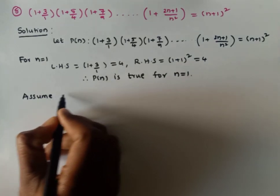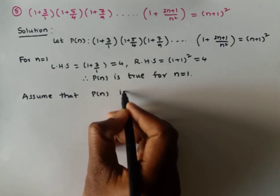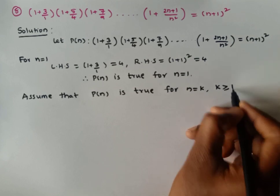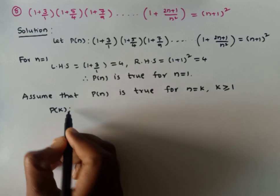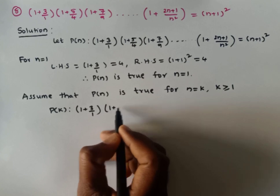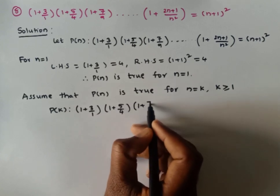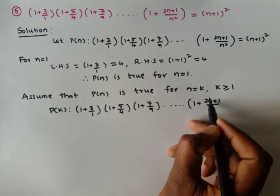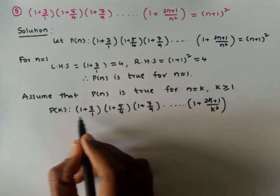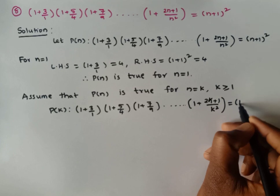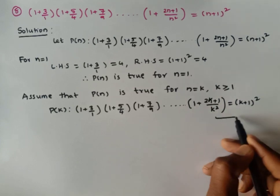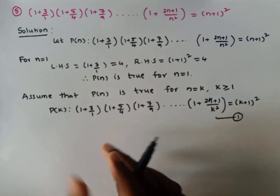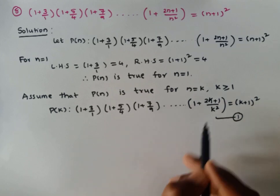The second step is the assumption. Assume that the given statement P(n) is true for n=k, where k ≥ 1. Then P(k) is: (1 + 3/1)(1 + 5/4)(1 + 7/9)...(1 + (2k+1)/k²) = (k+1)². Let this be equation 1. Now we have to show the statement is true for n = k+1 whenever P(k) is true.